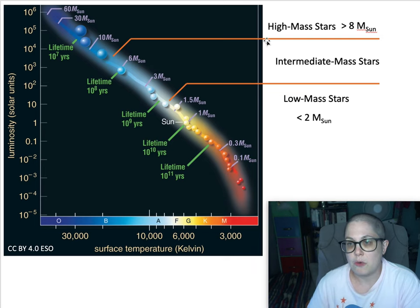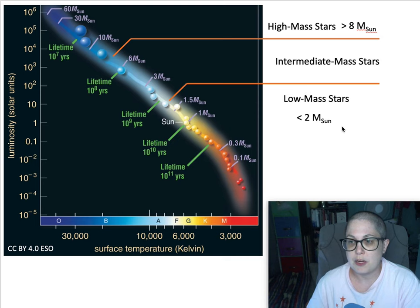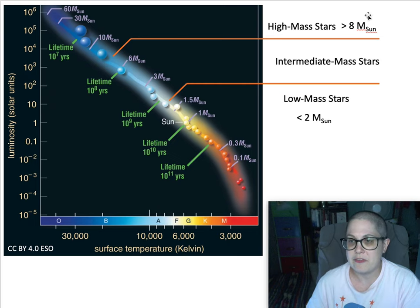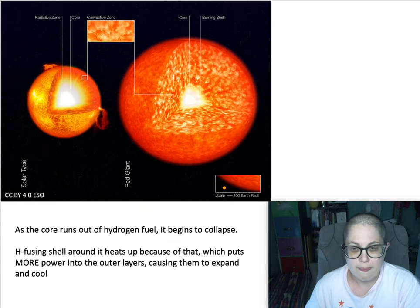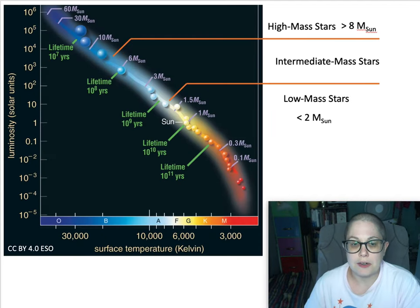High mass stars are ones greater than eight solar masses — that's a key turning point. Low mass stars, like the sun, are anything less than about two times the mass of the sun. We'll spend time on intermediate mass stars because they pretty much do the same thing as low mass stars, so you can group low and intermediate mass stars together in terms of what they do throughout their life. High mass stars are going to be a little different.